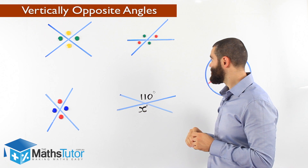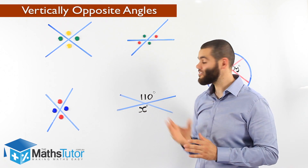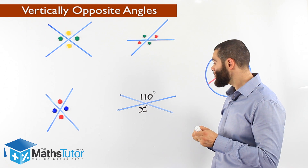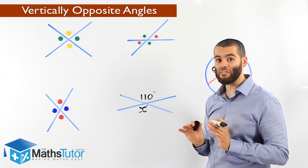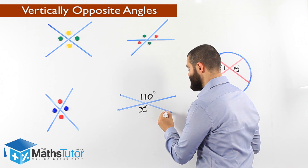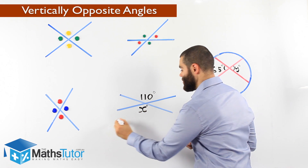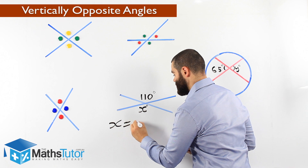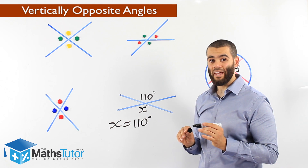We mentioned that vertically opposite angles are equal in size, and that concept is going to help us. Looking at this example, X equals 110 degrees. Why? Because they are vertically opposite — this angle here is opposite to that angle there. So we say X equals 110 degrees.